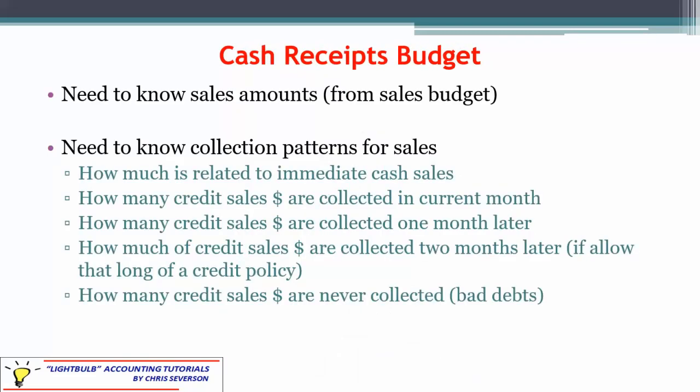To complete the cash receipts budget, our main thing is sales. We need to know the sales budget numbers because that's what we're eventually going to collect. But it's not that simple in most cases — it's not just taking the numbers from the sales budget and we're done. Instead, we have to look at our collection patterns. Assuming we're not a cash-only company, because if we were, whatever the sales figures are would also be our cash collections. But in most cases, companies allow credit — payments over time, accounts receivable.